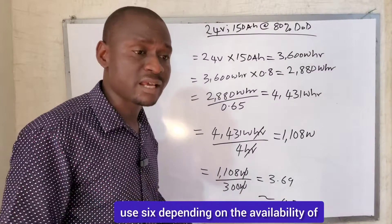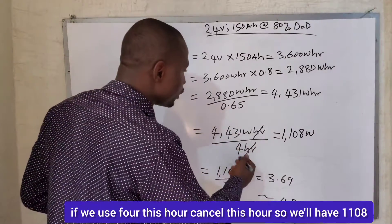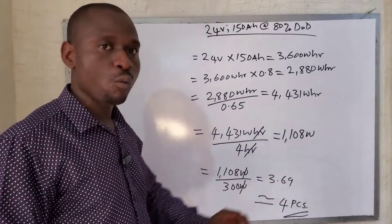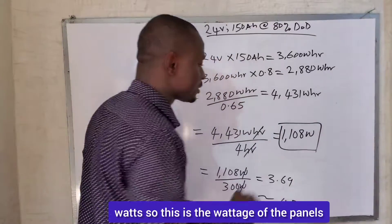You can use 5, you can use 4.5, you can use 6, depending on the availability of sunshine in your area. So if we use 4, the hours cancel, so we'll have 1,108 watts. So this is the wattage of the panels that we need.